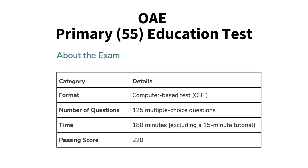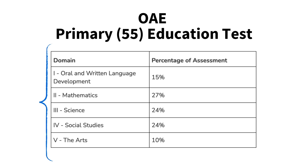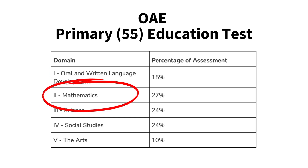The Primary Education Exam No. 55 is a required test for people who want to become a licensed educator in the state of Ohio. You will receive a total of 125 multiple choice questions, and there are five subject domains covering this exam. The questions we'll cover in this video lesson focus on domain two, Mathematics.